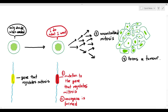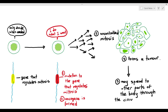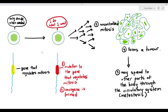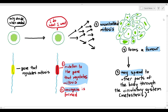What makes cancer particularly dangerous is that these cancer cells may spread to other parts of the body through the circulatory system — this is known as metastasis. For example, cancer in the liver can send cells into the blood vessel, which spread to the lungs and continue dividing there, forming lung cancer. The person can then have cancer in two parts of the body simultaneously. Sadly, when metastasis occurs, the chances of recovery are greatly reduced.